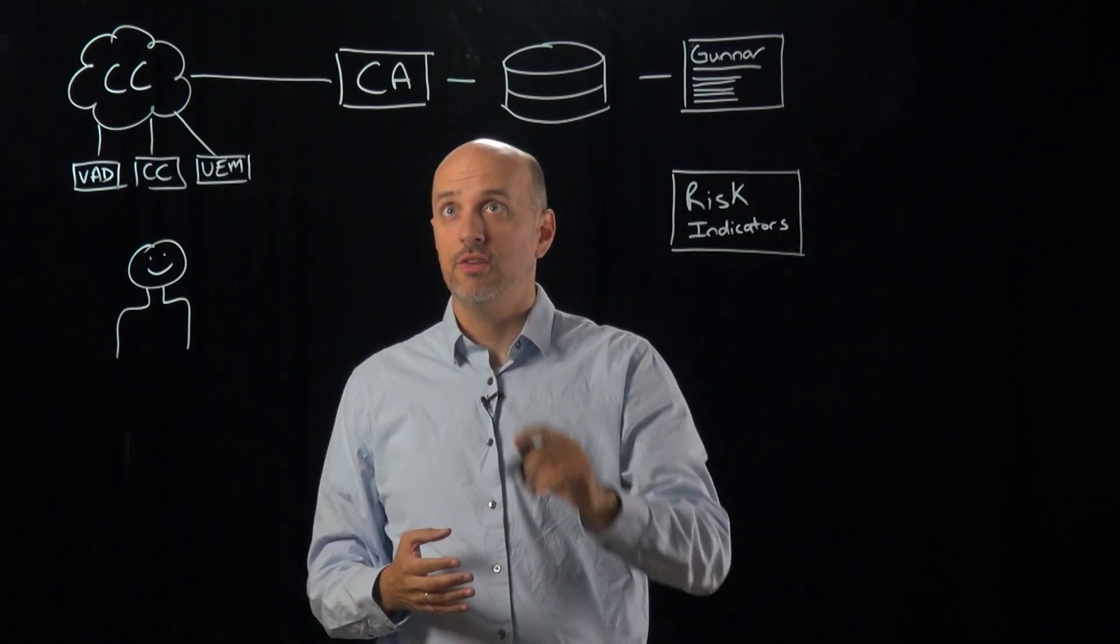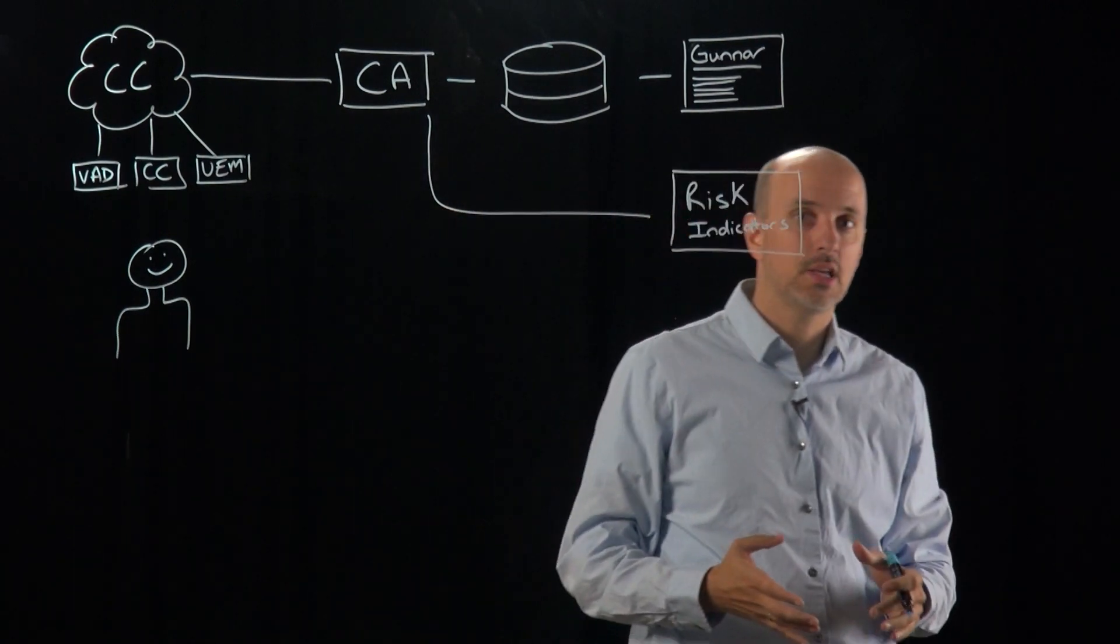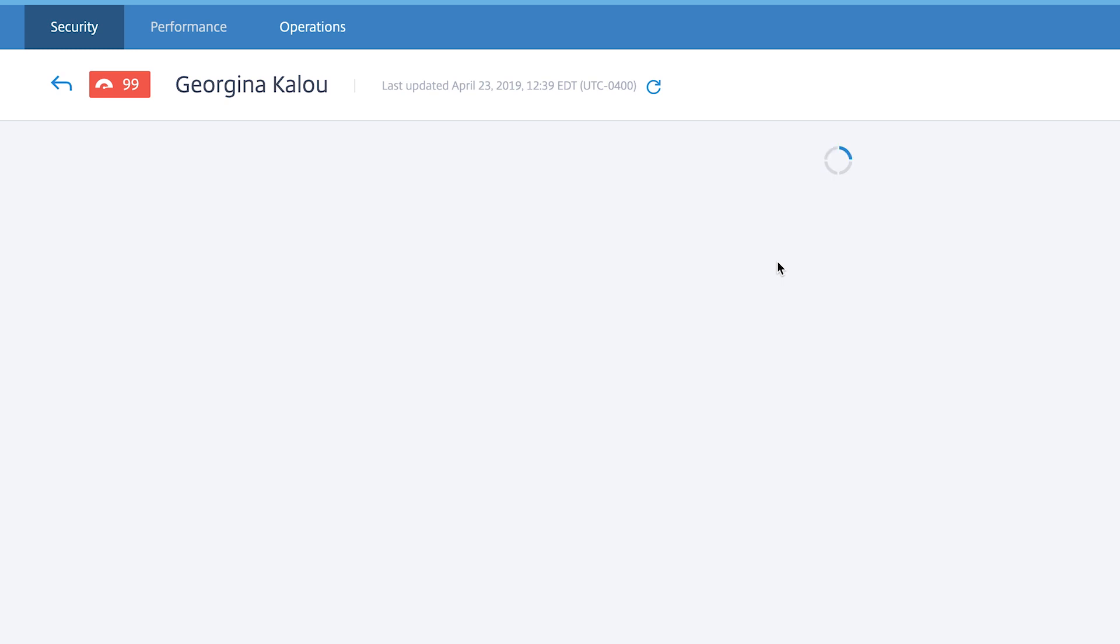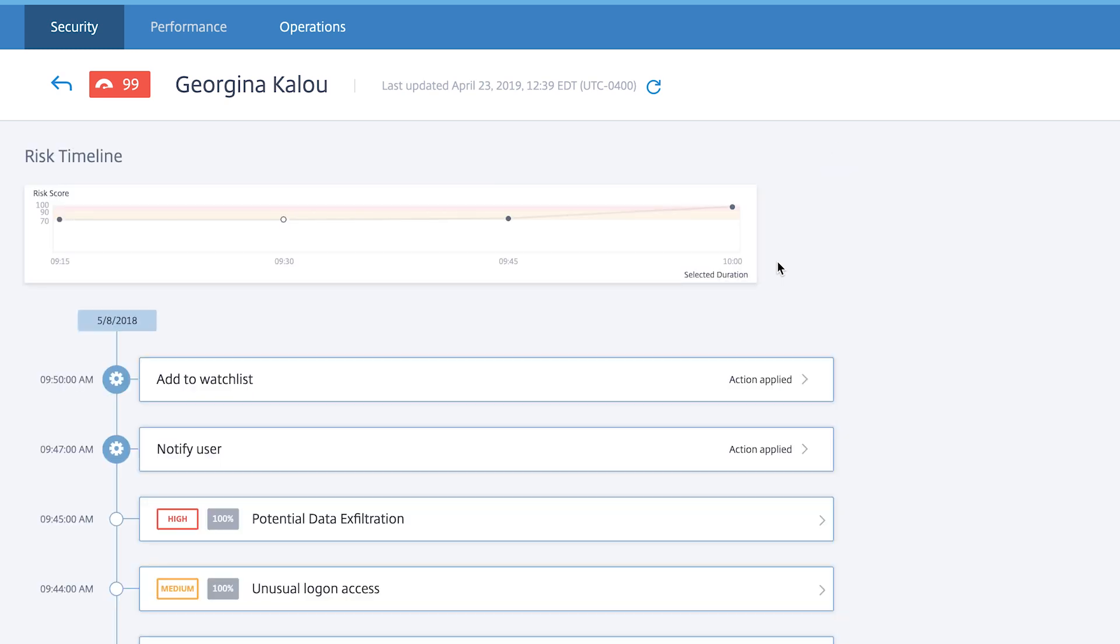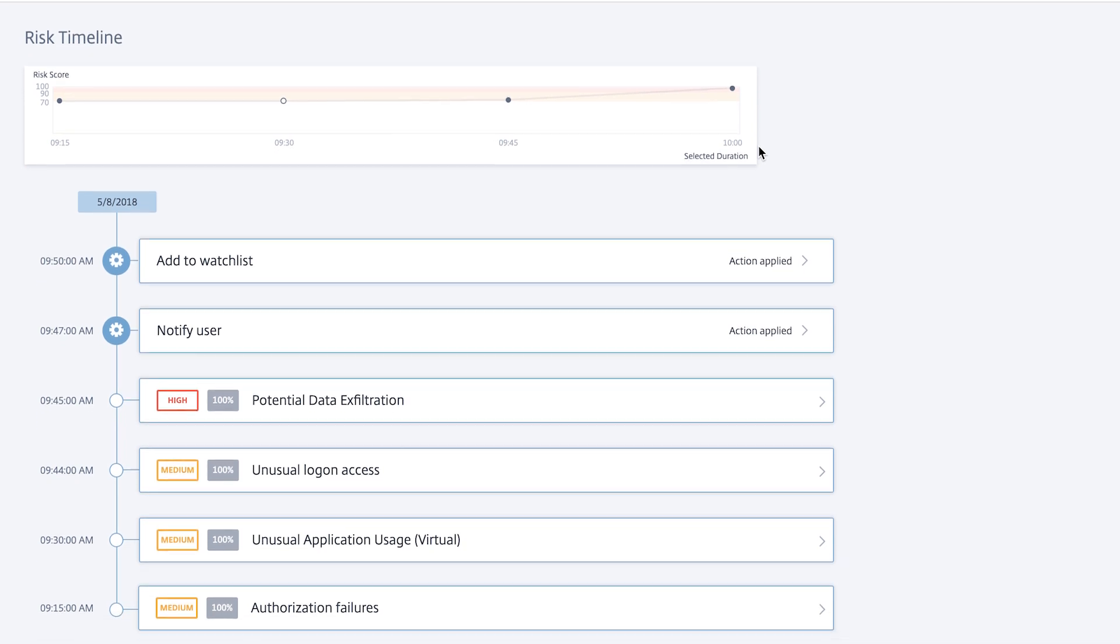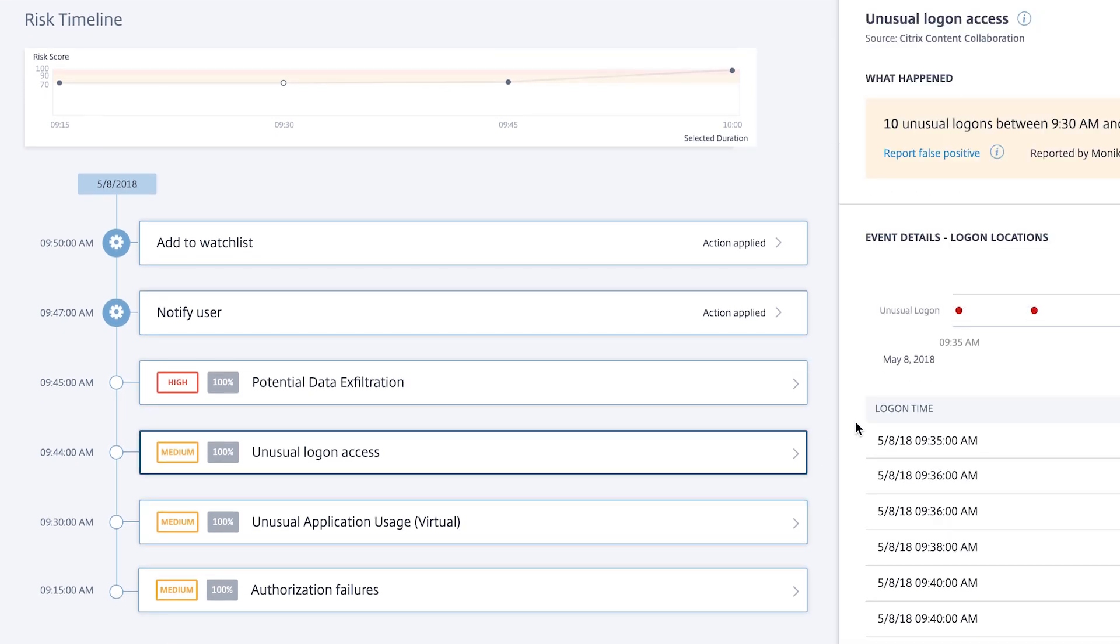When a rule is violated, Citrix Analytics immediately increases the risk score for that user and presents it on the user risk timeline as a risk indicator, as you can see here. Everything you see in the user risk timeline is a mix of rule violations and our machine learning algorithm displaying potential areas of concerns as risk indicators.